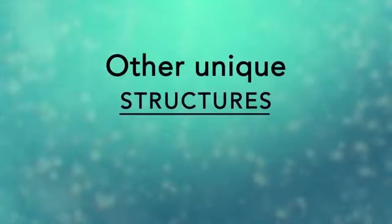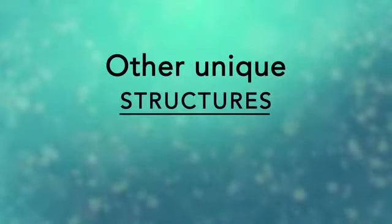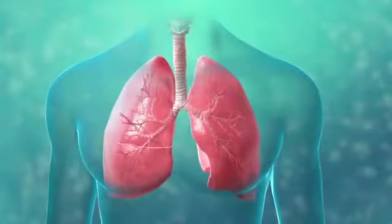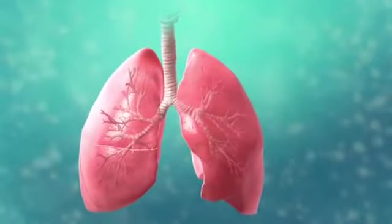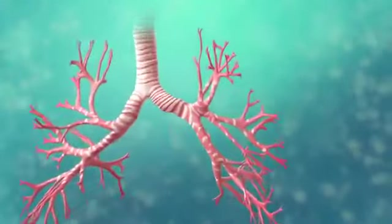There are many other unique structures that only some cells have. Here are just a few. In humans, for example, the respiratory tract is lined with cells that have cilia. These are microscopic hair-like projections that can move in waves. This feature helps trap inhaled particles in the air and expels them when you cough.